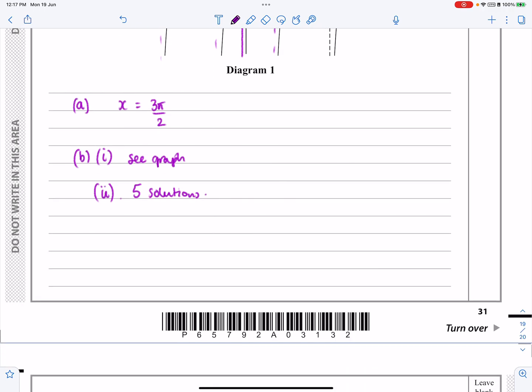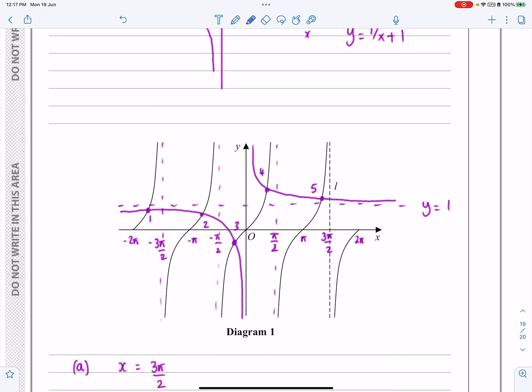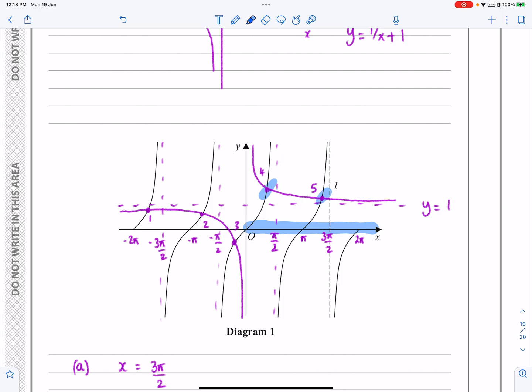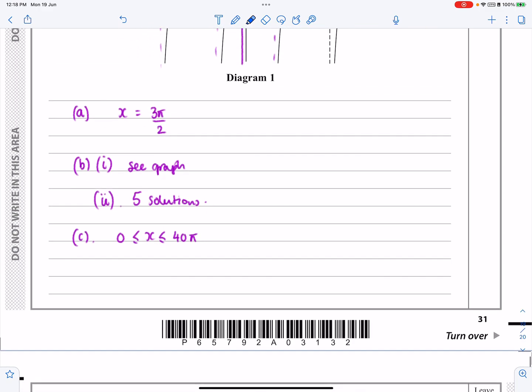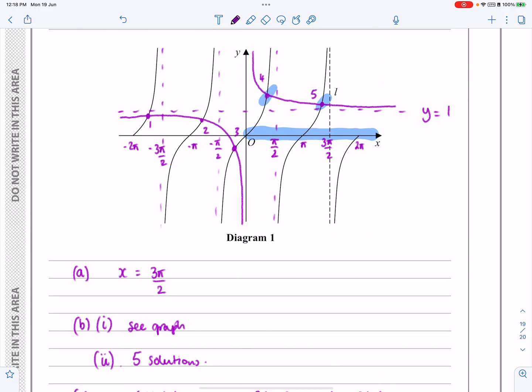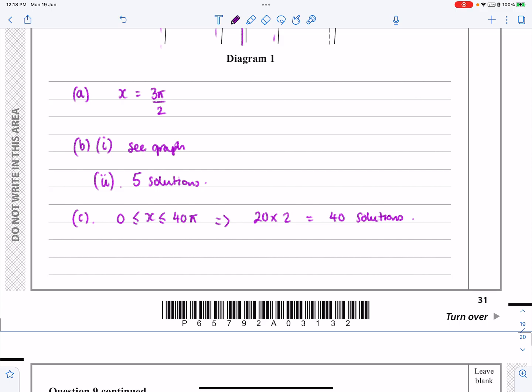On to part C then. Part C, they're just going to start messing around with the range of values. So they say, for exactly the same idea, how many solutions are there between 0 and 40π? So what I'm looking at is this part here between 0 and 2π. Between 0 and 2π, there are those two solutions. So between 0 and 40π, there's just going to be 20 lots of that. So between 0 and 40π, 20 times 2 solutions will give me 40 solutions there. And I'll get rid of the highlighter. That's just to explain it to you. Not part of my answer. That was C part 1.